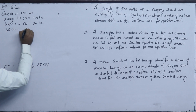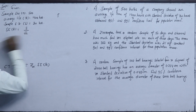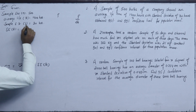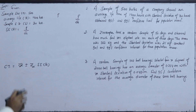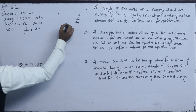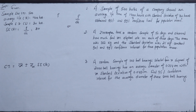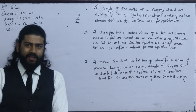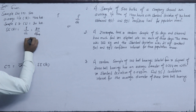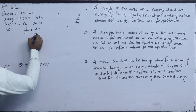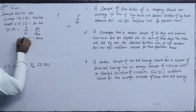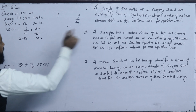The standard error is σ divided by the square root of n, which is 30 divided by the square root of 500, giving 1.3416. This is the standard error about the mean. The confidence level is 1 minus alpha.